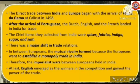With the arrival of the Portuguese, the Dutch, English, and French also landed in India for trade. The chief items they collected from India were spices, fabrics, indigo, sugar, and salt. There was a major shift in trade relations among the Europeans.